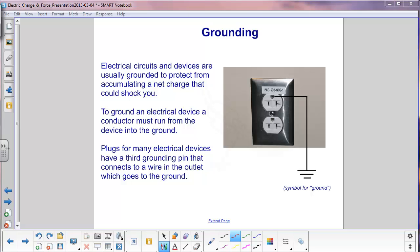Plugs for many electrical devices have a third grounding pin. You can see it up here, this little guy right here, that has a wire that conducts typically to a metal pipe in your basement, a plumbing pipe perhaps, that eventually has another wire going from it into the ground. This will enable any excess charge to flow through that wire into the ground instead of through you into the ground, which is a lot safer.